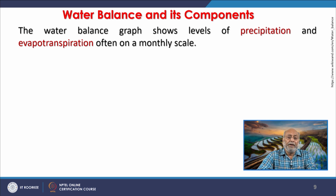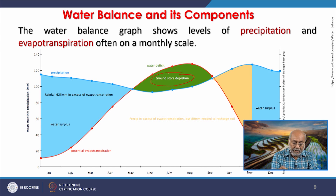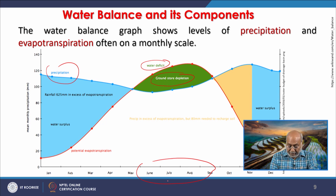A water balance graph shows levels of precipitation and evaporation. For example, we can see groundwater depletion and groundwater deficit, with precipitation curves varying by month — June, July, August, September — showing different scenarios. These curves give us an idea about the water balance in a particular area.